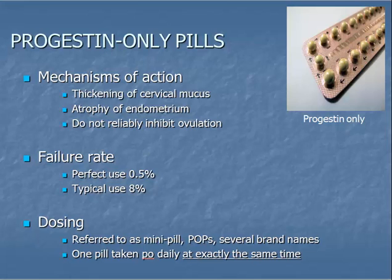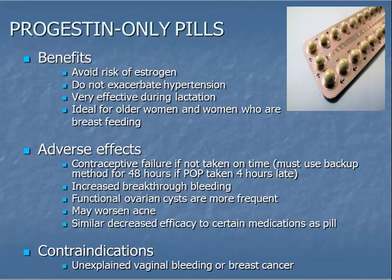Progestin-only pills are pills taken by mouth daily that contain only a progestin and no estrogen component. They are an ideal method for women who are lactating or women who have contraindications to using a method that contains estrogen. They require a very conscientious patient because they only work if taken at the same time each day. Listed here are benefits, potential adverse effects, and contraindications to using progestin-only pills.